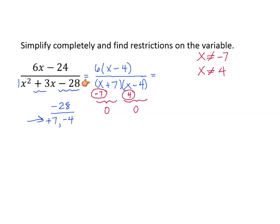Notice that we found the restrictions after factoring but before canceling — that's the correct order. Now we cancel: x minus 4 over x minus 4 equals 1, since any expression over itself is 1. So the completely simplified result is 6 over x plus 7, with restrictions x cannot equal negative 7 and x cannot equal positive 4.